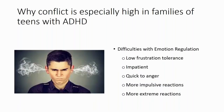A second reason why teens with ADHD experience higher levels of conflict, both with peers and with parents, is the fact that they have difficulty managing their emotions. Russell Barkley has described teens with ADHD as having a low frustration tolerance, impatience, and quickness to anger. Specifically, teens with ADHD are less able to moderate or suppress their emotional reactions, especially in frustrating or upsetting situations, making them more likely to show an impulsive or extreme reaction relative to other teens their age. These extreme reactions can often be very upsetting or embarrassing for parents and can cause additional conflict.